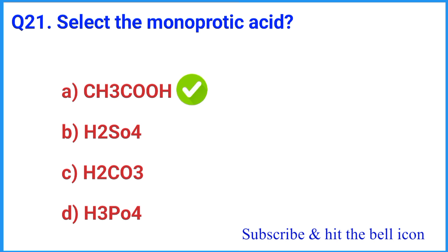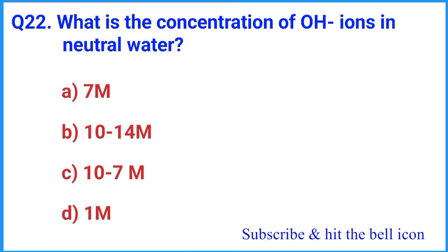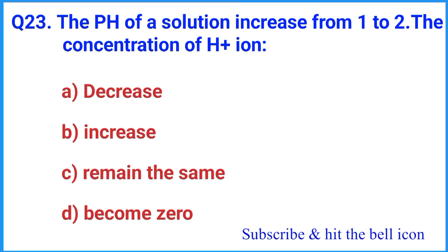Question number 22: The correct answer is option C. Question number 23: The pH of a solution increases from 1 to 2 — the concentration of H+ ions — the correct answer is option A: decreases.